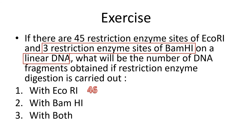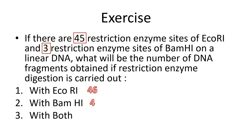BamHI has 3 restriction enzyme sites, and the DNA is still linear, so the number of fragments will be 3 plus 1, equal to 4. In the condition where both restriction enzymes are used — 45 sites of EcoRI and 3 sites of BamHI — the total is 48 sites, because EcoRI cuts at 45 sites and BamHI cuts at 3 sites. So total you have 48 sites, and since the DNA is still linear, it will be 48 plus 1, giving you 49 fragments.